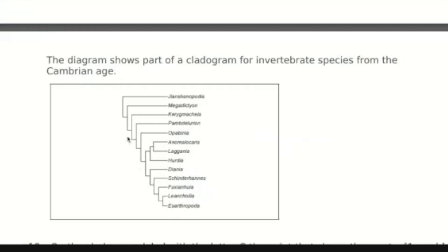The further back you go, the more differences there are between groups — like the one at the top and the two at the bottom, which are the furthest apart. You would predict that if you searched for Cox 1 sequences, you'd see the biggest difference between the one at the bottom and the one at the top, because that is the basis of molecular cladistics.